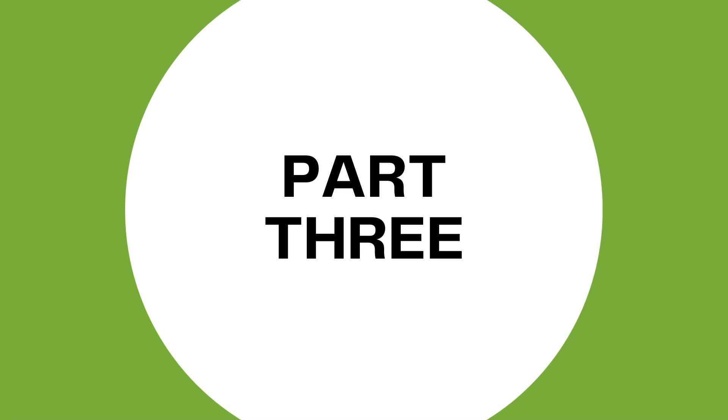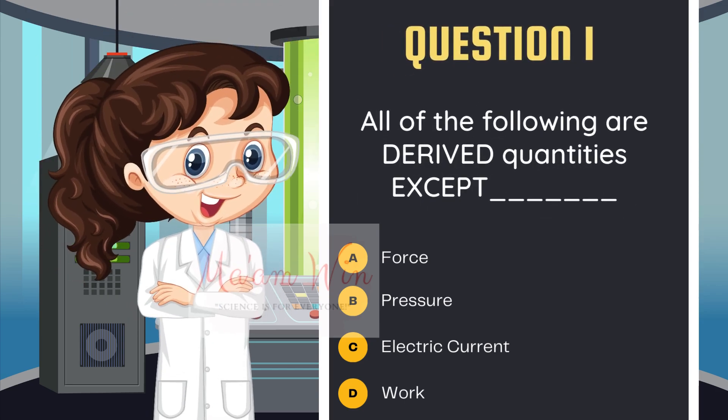Let us now proceed with part 3. Question number 1. All of the following are derived quantities except: letter A, force; letter B, pressure; letter C, electric current; letter D, work.